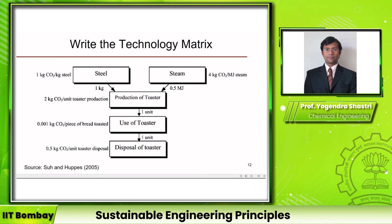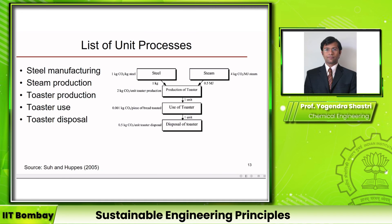The process here is to identify the various unit processes and product flows and then write the technology matrix. There are five unit processes: steel manufacturing, steam production, toaster production, toaster use, and toaster disposal.